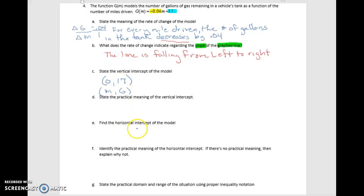So the horizontal intercept, keep in mind, an ordered pair for the horizontal intercept is something 0. And so that always means that output is 0. So we're going to solve for the input. Again, this would be M and G. And so that means that we have 0 gallons equals negative 0.04 M plus 17.